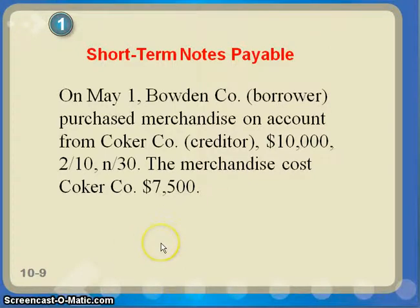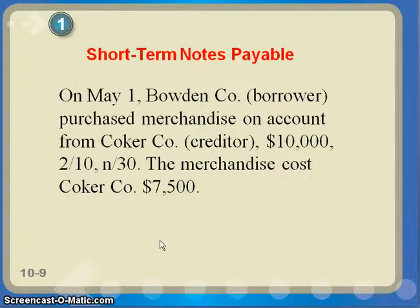Let's look at this scenario. On May 1st, Bowdoin Company, who is the borrower, purchased merchandise on account from Coker for $10,000, terms 2/10 net 30. The merchandise cost Coker $7,500. So let's look at Bowdoin's journal entries.